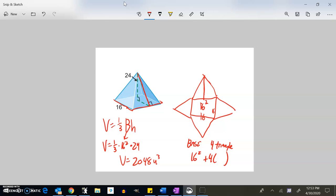Notice I have this right triangle here with this side 24, and this side is half of that 16, which is 8. So I have a right triangle that's 24, 8, and then I want this side, which is this slant angle, this height.